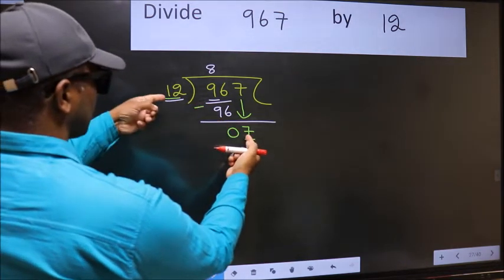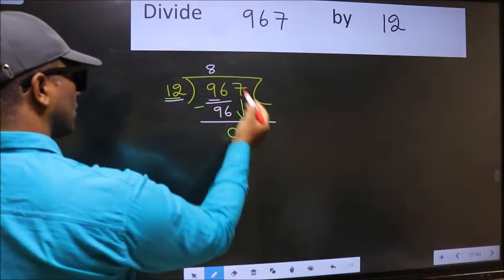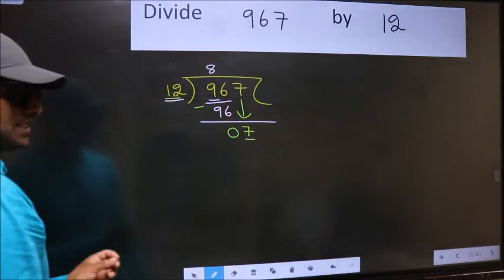7 is smaller than 12. So what many do is, they directly put dot and take 0, which is wrong.